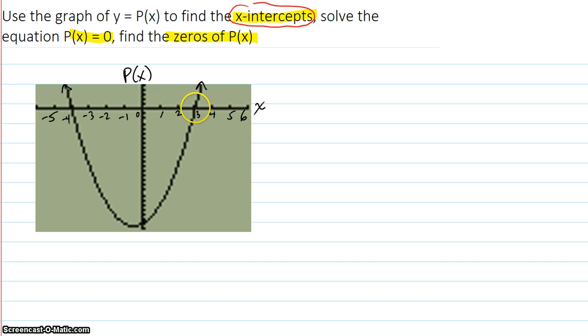So, the graph crosses here at 3, 0, and the graph crosses here at negative 4, 0.